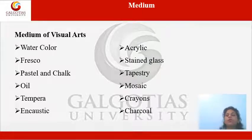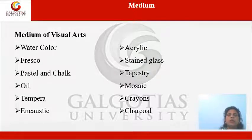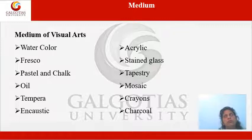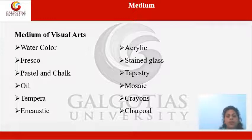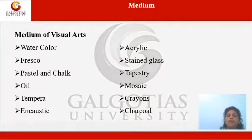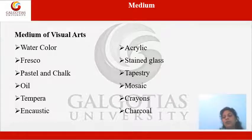Now let us talk about the different mediums of visual art. Some we will study today and some in the next lecture. We have about 10 to 12 mediums: watercolor, fresco, pastel and chalk, oil, tempera, encaustic, acrylic, stained glass, tapestry, mosaic, crayon, and charcoal.